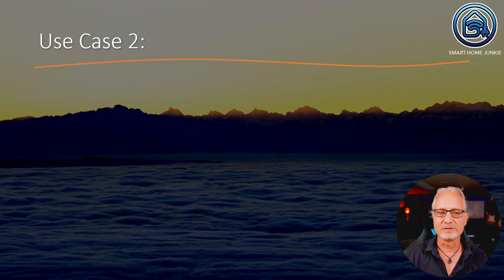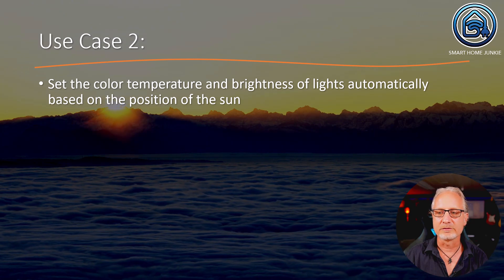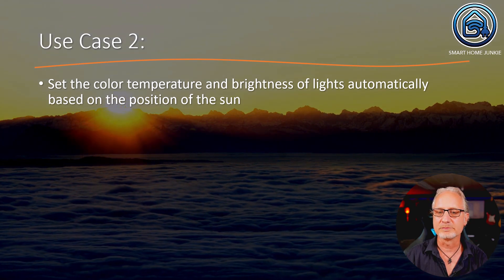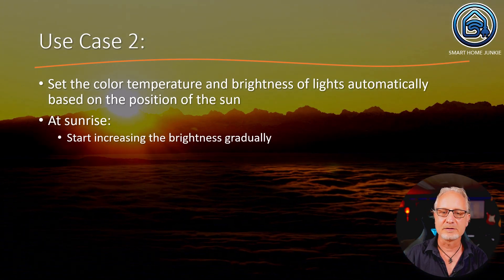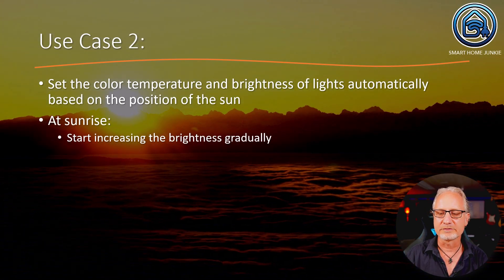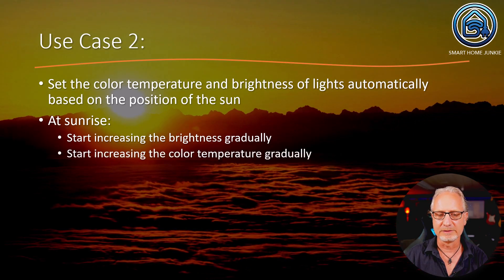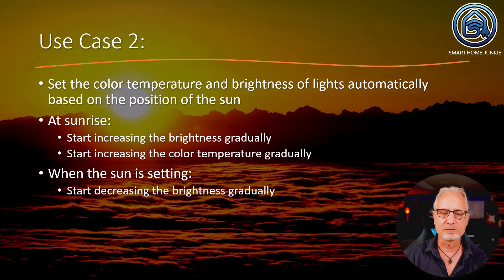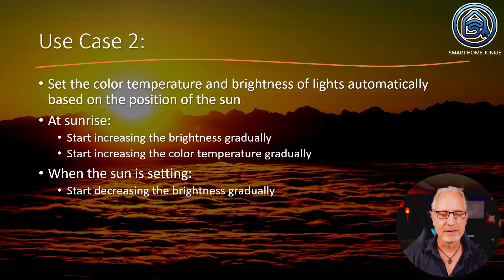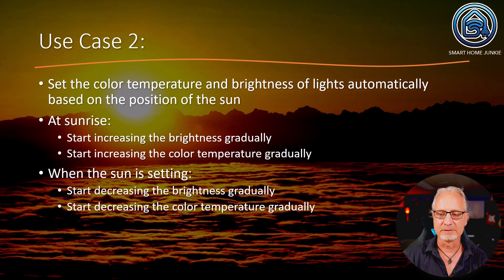Then the second use case: set the color temperature and brightness of lights automatically based on the position of the sun. At sunrise, start increasing the brightness gradually and start increasing the color temperature gradually. When the sun is setting, start decreasing the brightness gradually and start decreasing the color temperature gradually. Now let's set this up.